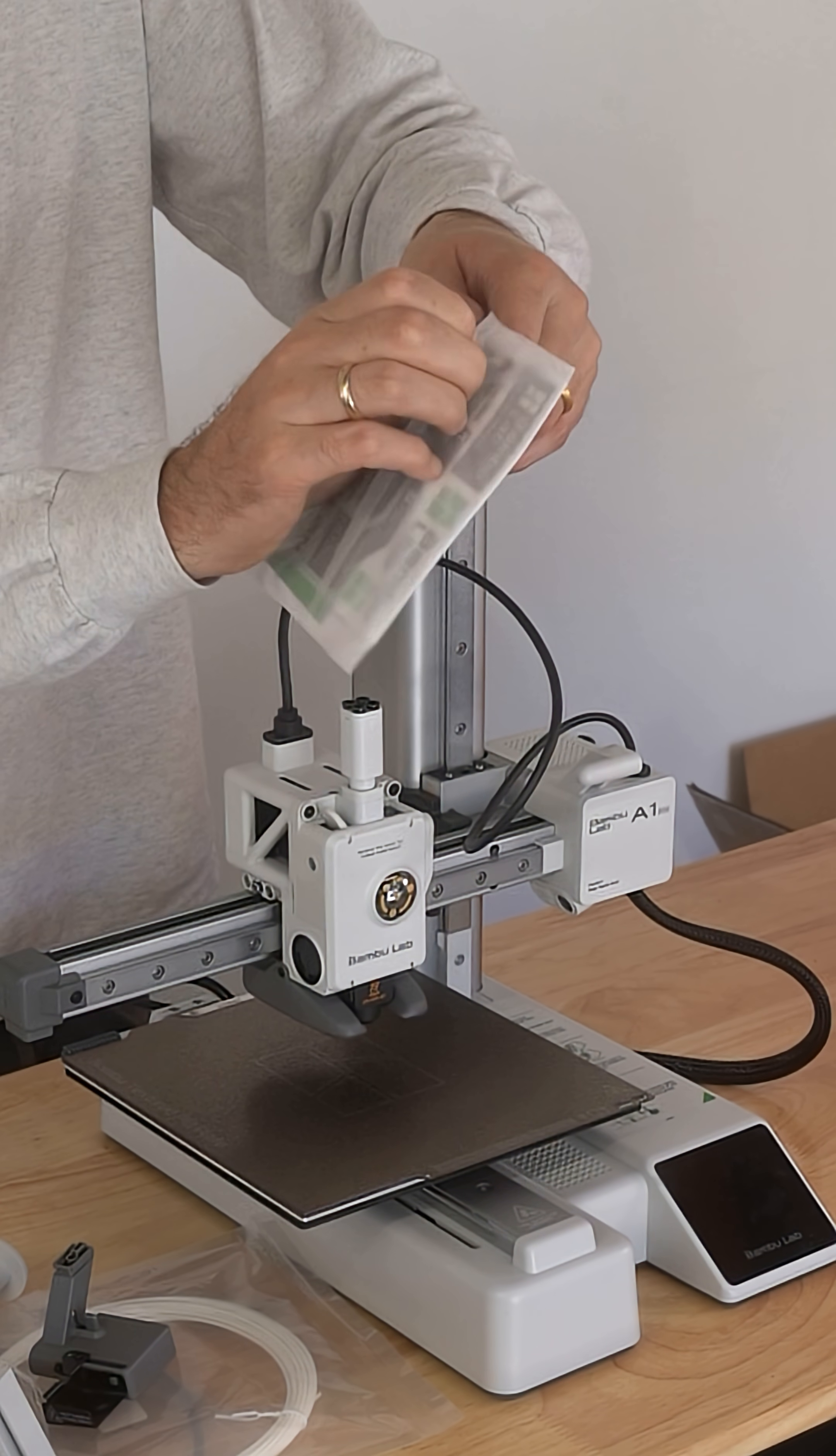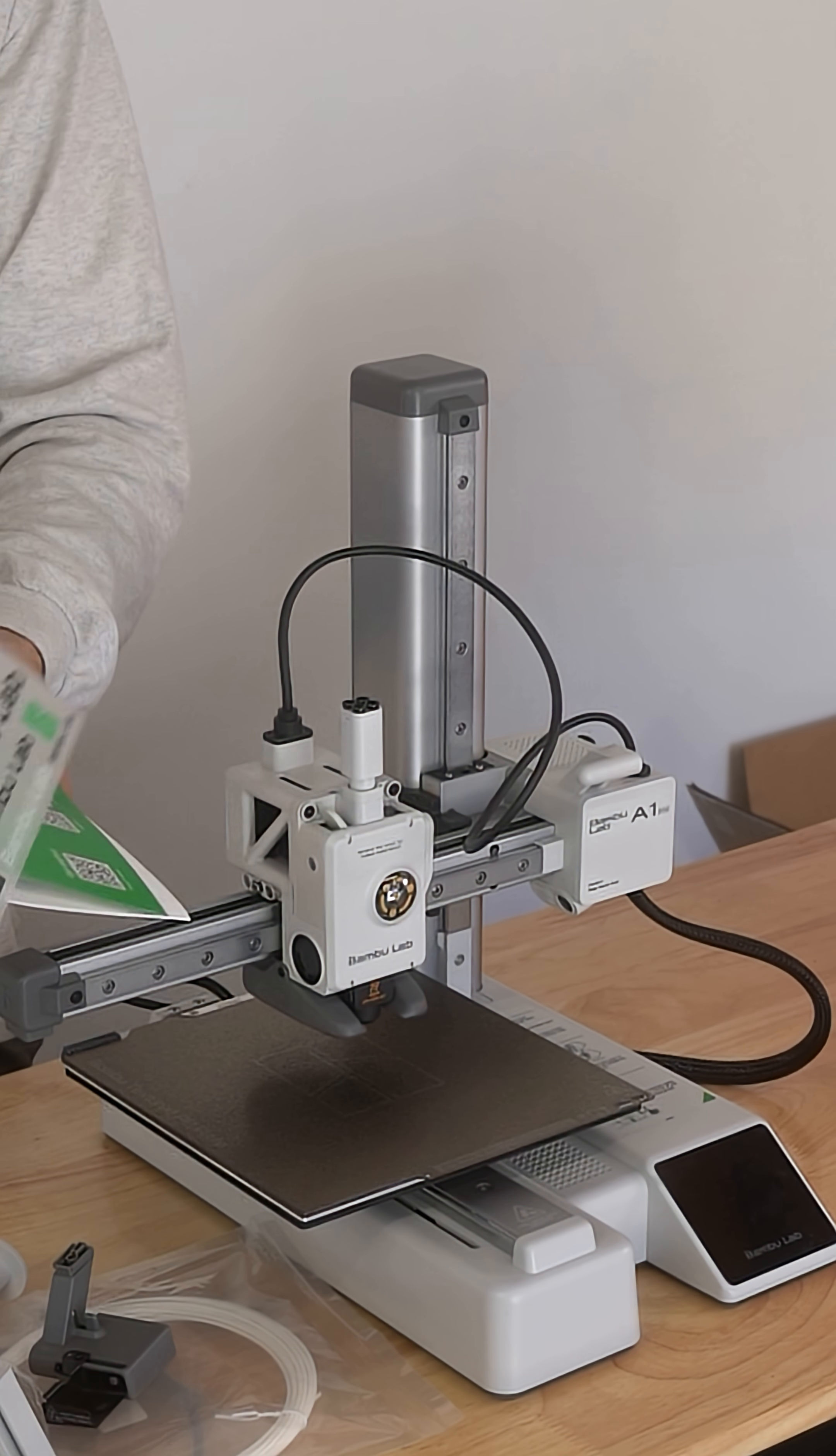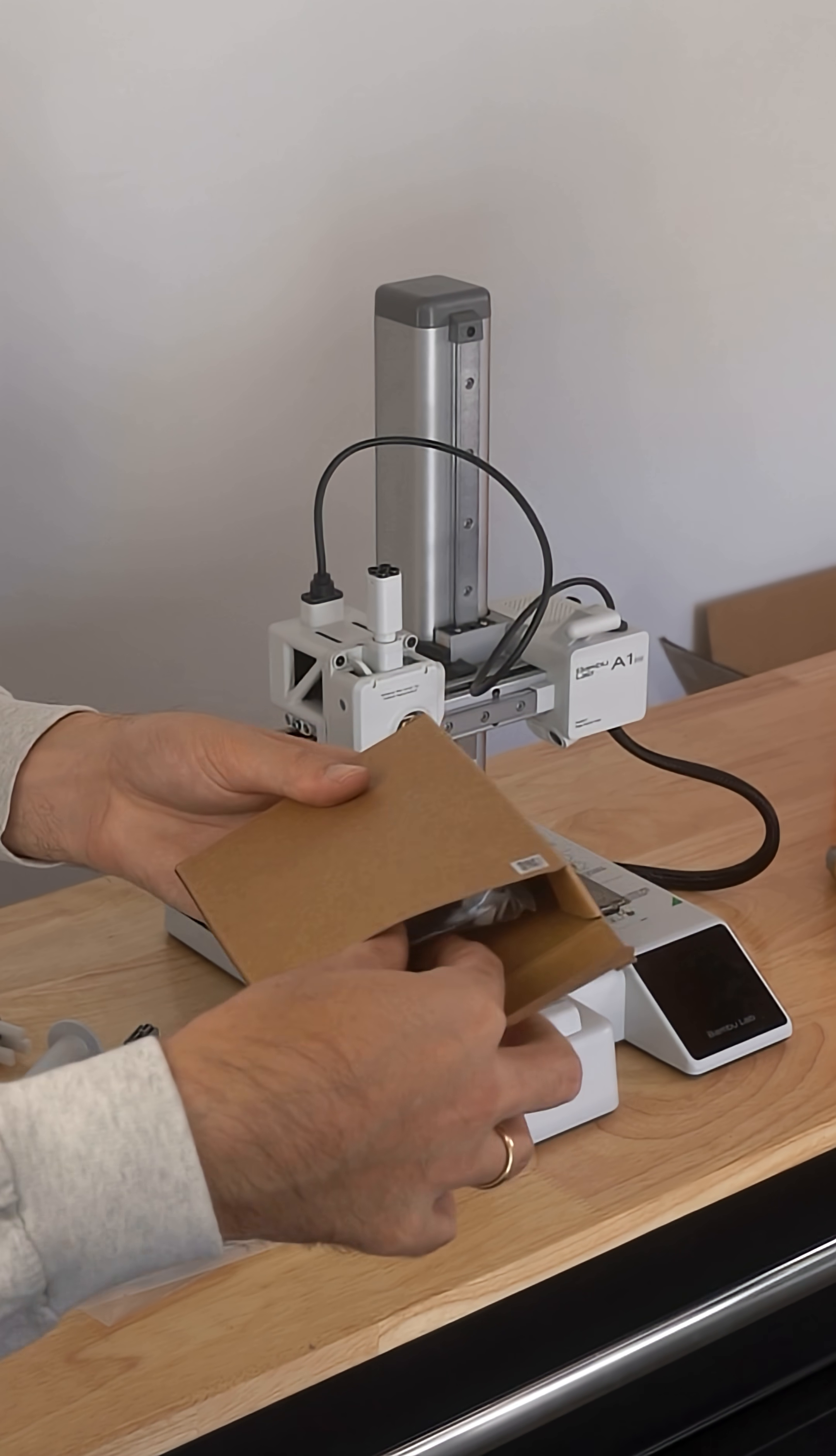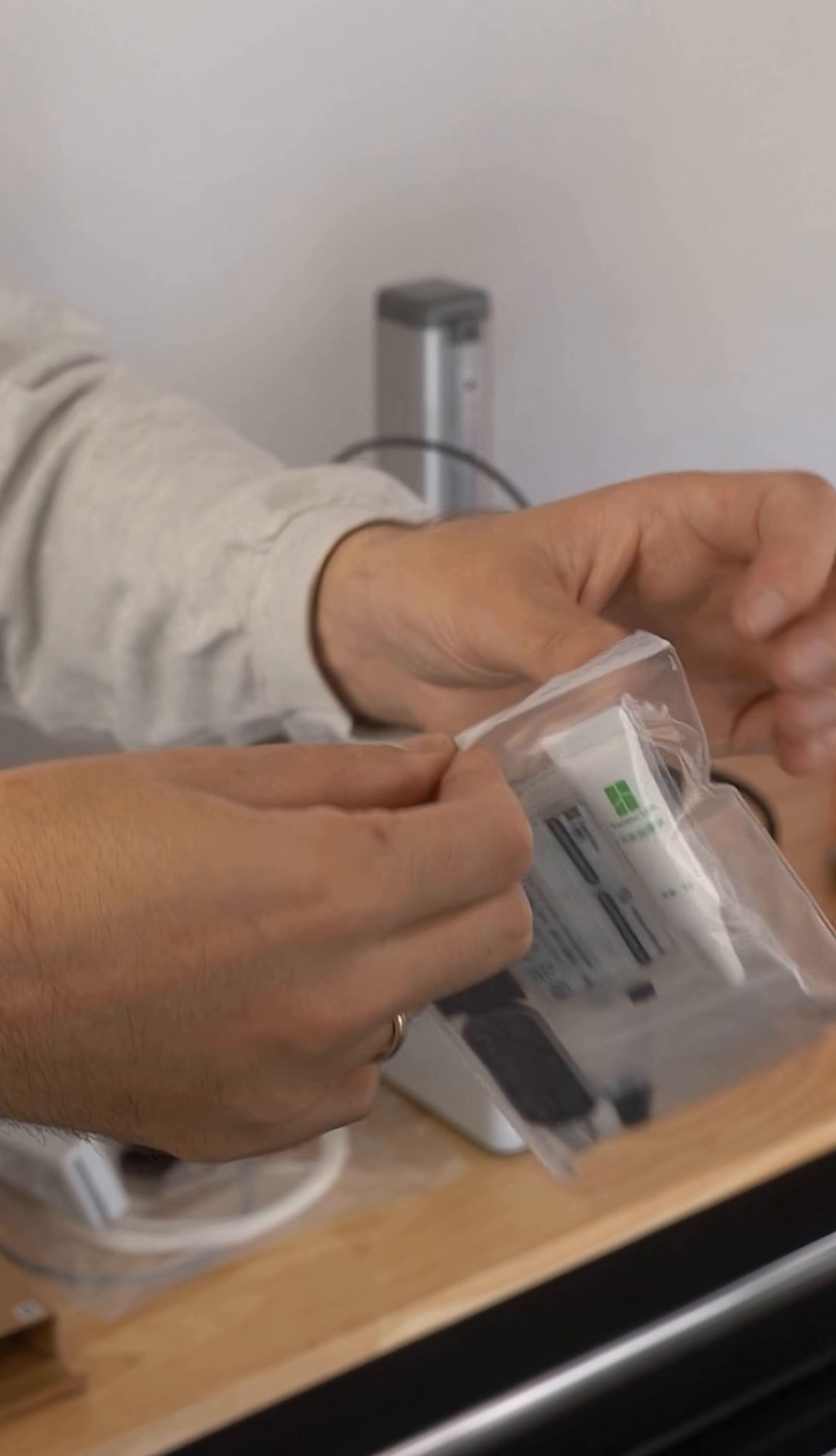Next, go ahead and find the setup guide. We'll essentially be going through this guide in this video series. In the packaging, you'll find this small cardboard box, which contains some extra components as well as some tools that we'll need to set up the printer.